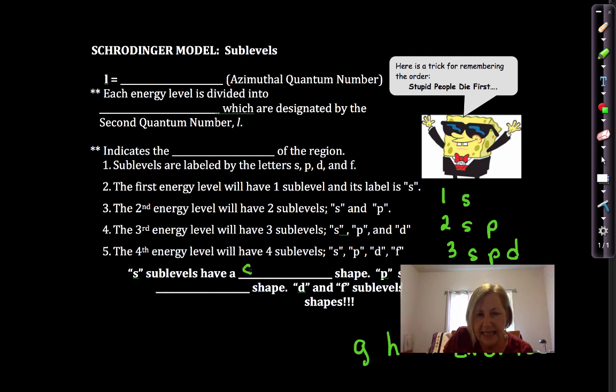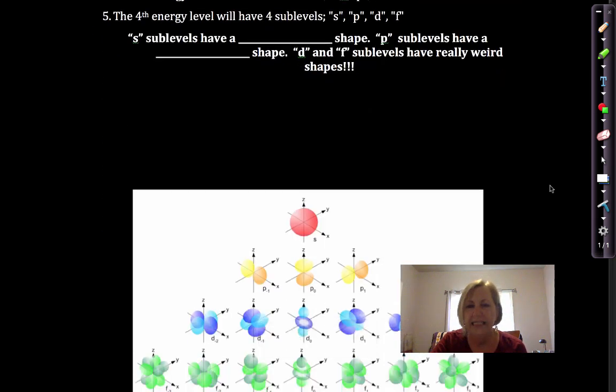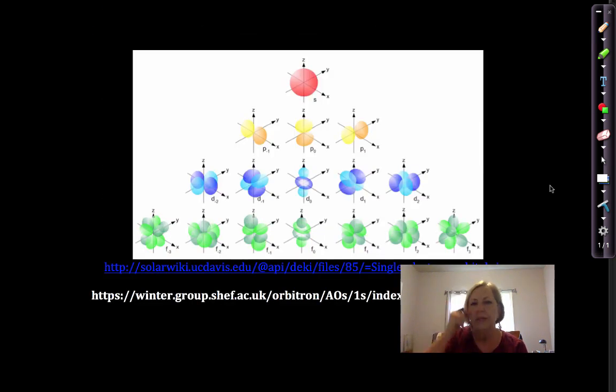Now, S has a spherical shape. I'll show you some cool pictures of these. P sub-levels have a dumbbell shape. And I'll tell you right now, a lot of end-of-course exams in high school and some college exams. I haven't seen it much in an AP or IB exam, but you should still know these. You should be able to recognize different sub-levels by their pictures.